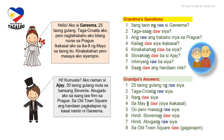Saan daw ang handaan nila? Where did they say the wedding reception would be? Grandpa's answer: Sa Old Town Square daw — at the Old Town Square. This is a short answer because the pronoun is omitted; we are simply stating the location with daw to indicate reported speech. You may also add gaganapin, which means 'will be held': Sa Old Town Square daw gaganapin — they said it will be held at the Old Town Square.